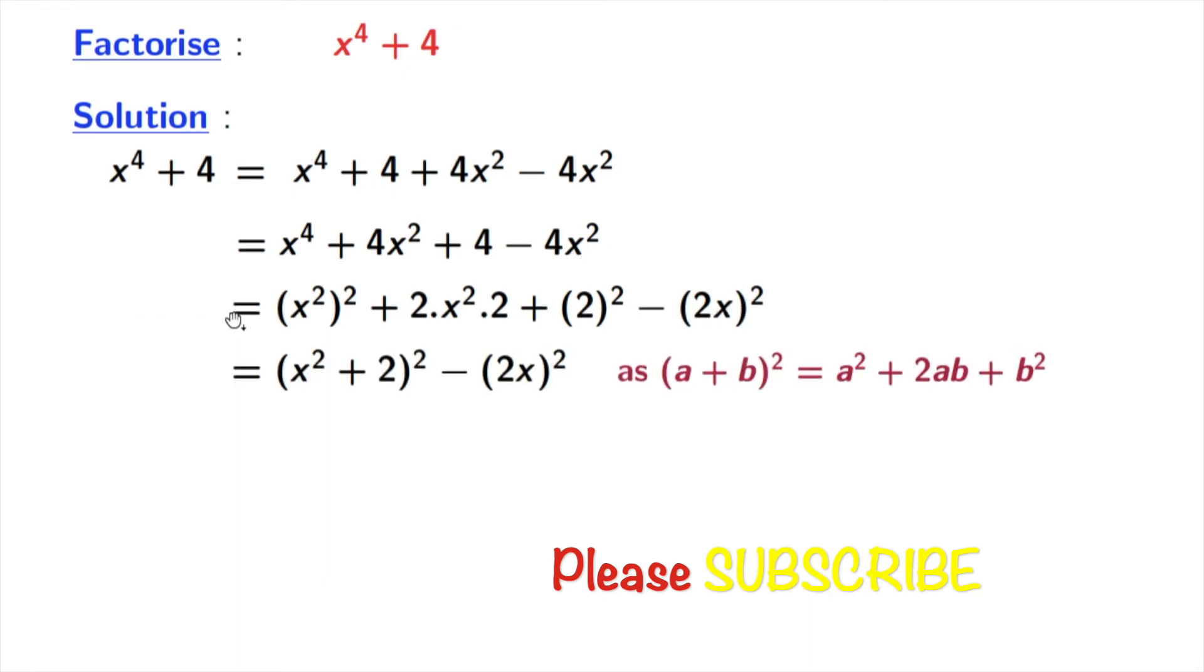Here we can apply a formula of a plus b whole square, where a is x square and b is 2. So doing that we get x square plus 2 whole square minus 2x whole square.